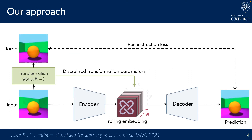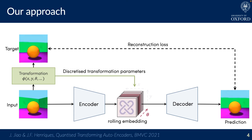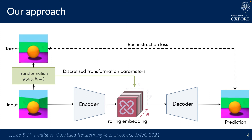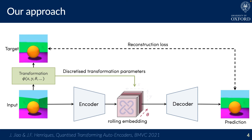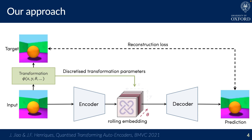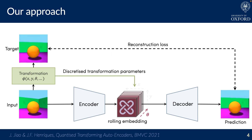Our approach transforms this regression into a much easier classification by discretizing the parameter space. Since we discretize the translation space with a 2D grid, it is easy to imagine extending it to a 3D or larger grid. So we simply extend the activation tensor with new dimensions, which may correspond for example to rotation.